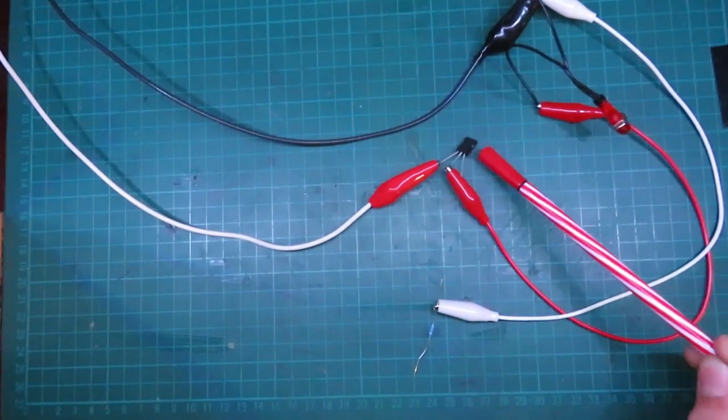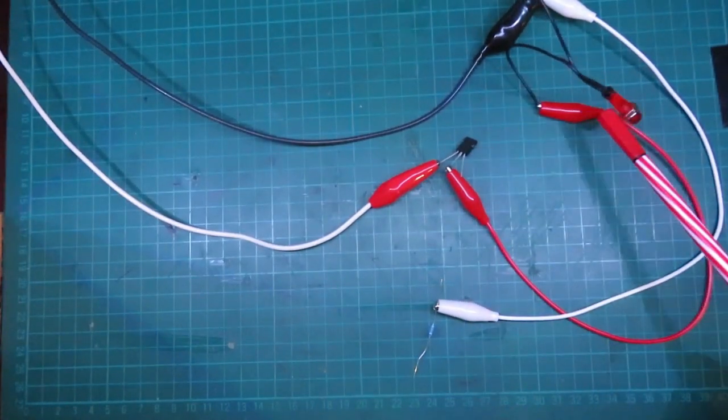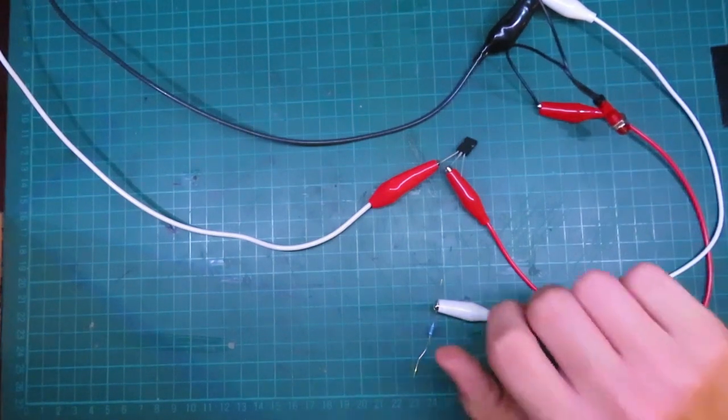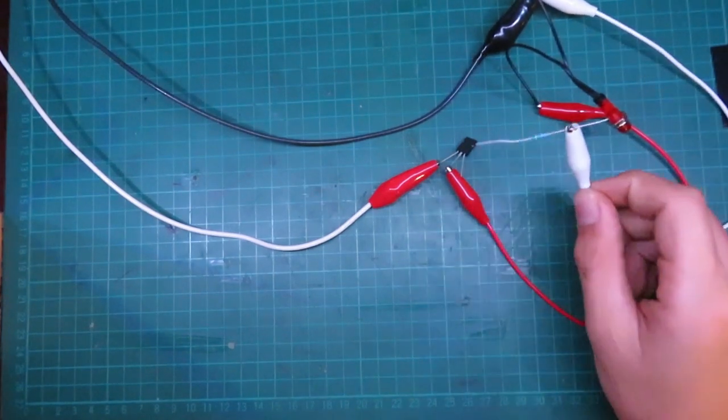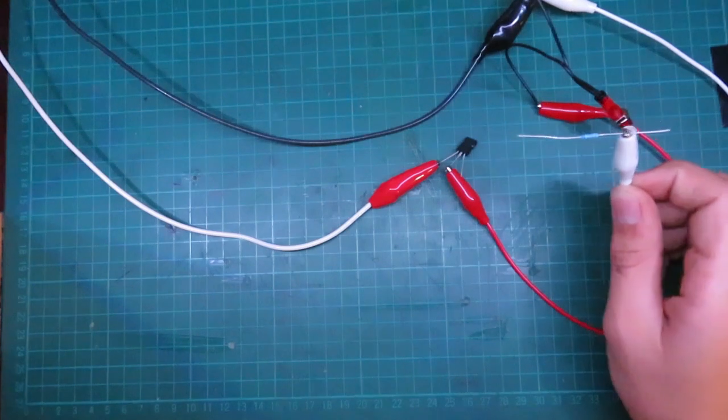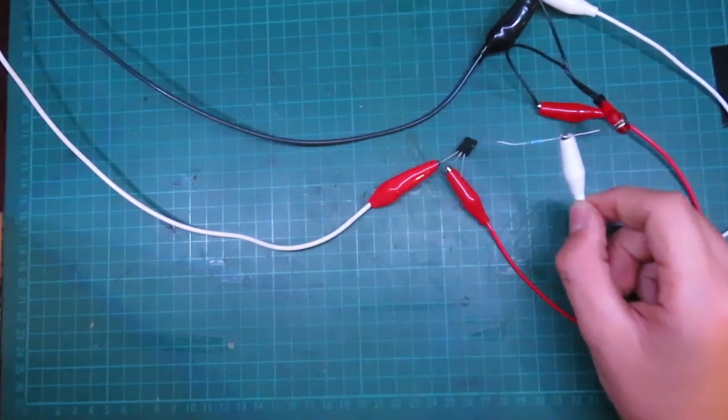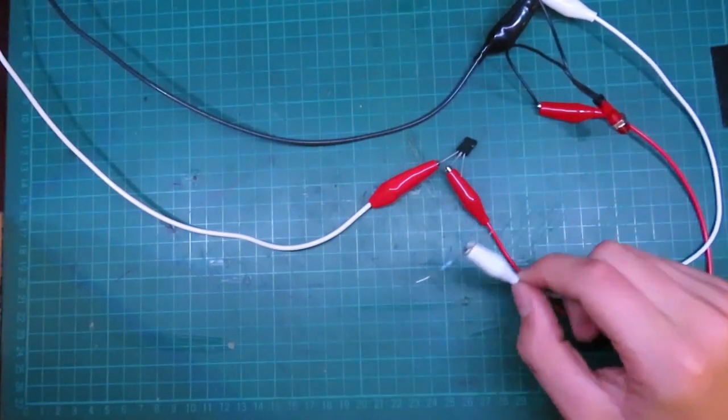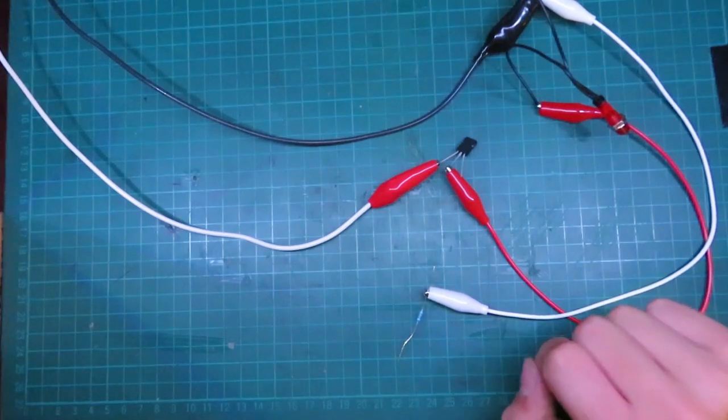Alright, so we have our triac wired up, and it's going to be controlling this light bulb right here. And, we'll have our signal wire with our 10K resistor here, and that will touch the gate and turn on the triac. So, we'll turn on the power.